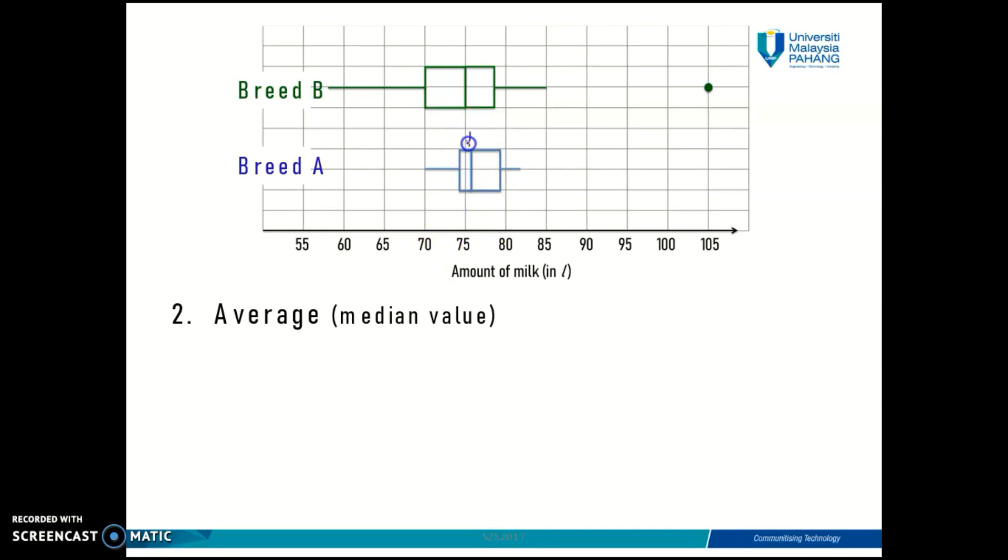This middle line here is the median. From here we can see that Breed B is slightly lower than Breed A, but it's a very small difference. We can say that on average, Breed A and Breed B actually produce the same amount of milk in a month because the median lines are quite close to each other.